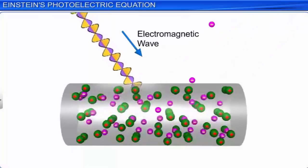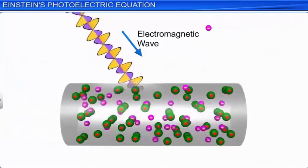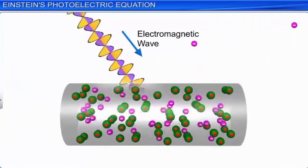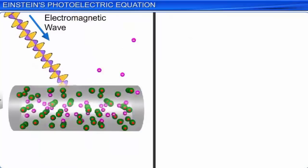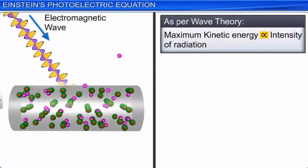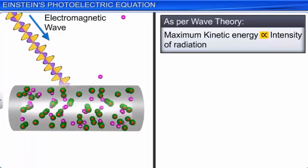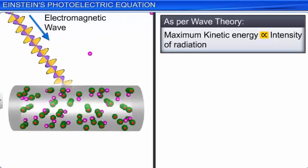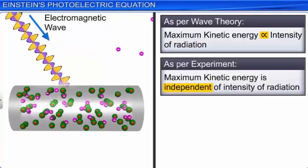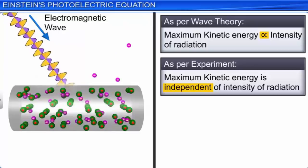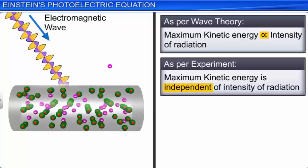If the amplitude of the waves incident on the metal surface increases, the energy of the waves increases, and hence the energy absorbed by the electrons increases. Therefore, as per the wave theory, we observe that the kinetic energy of the ejected photoelectrons increases with increase in the intensity of incident radiation. But photoelectric effect experiments show that as the intensity of the radiation increases, there is no increase in the maximum kinetic energy of the ejected electrons.